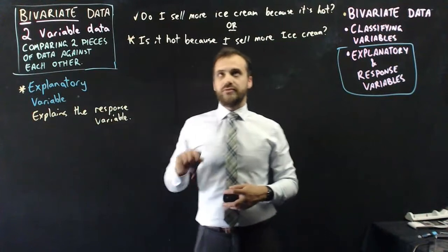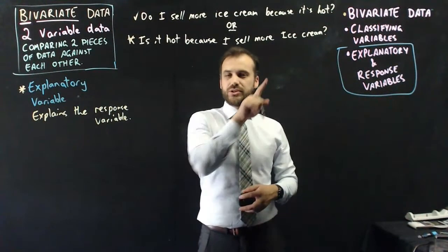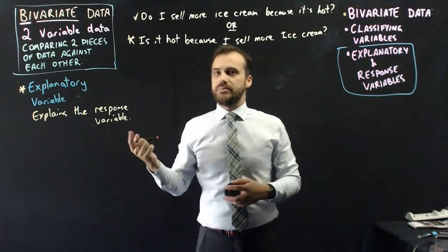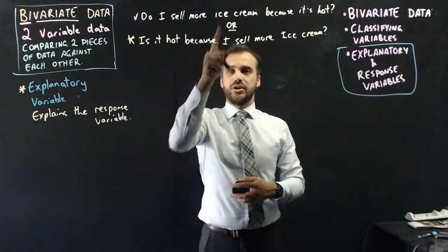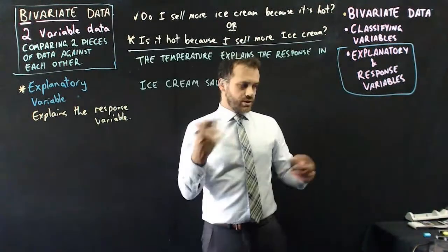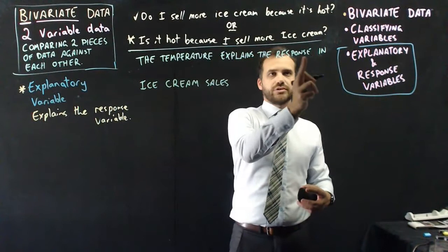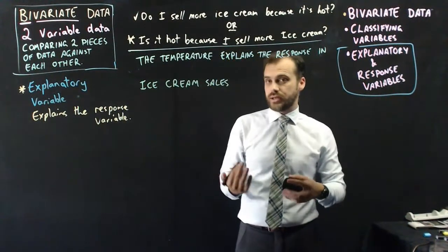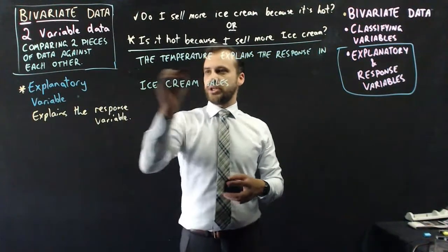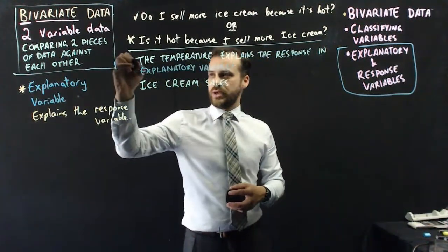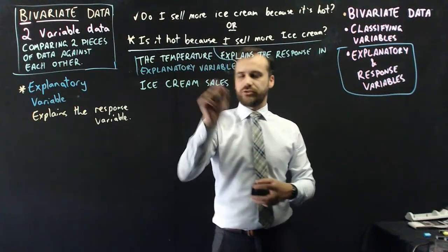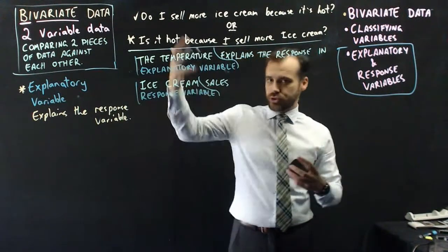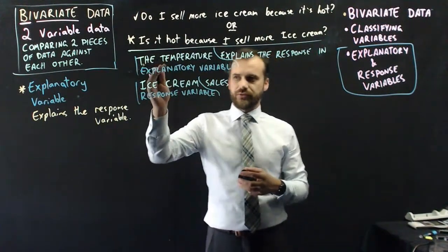So what's more likely here? Is the temperature of the day affecting the amount of people that buy ice cream from me? Or is the amount of people buying ice cream from me controlling the temperature of the day? Now hopefully you can see that this is true and this is not true. My ice cream vending business does not have the power to control the temperature. But the temperature does have the power to control how much ice cream I sell. Now in this case, the explanatory variable is the temperature because the temperature explains how many ice creams I sell. It explains the response variable.